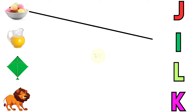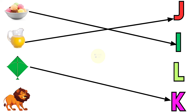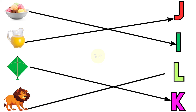I for ice cream, J for jug, K for kite, L for lion.